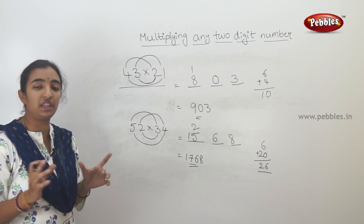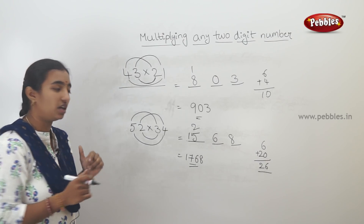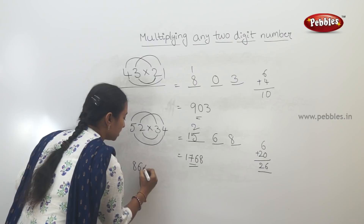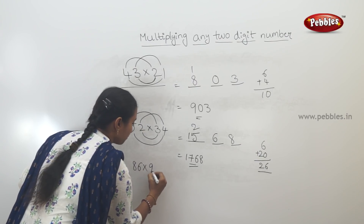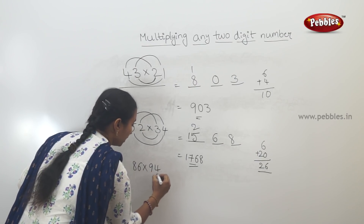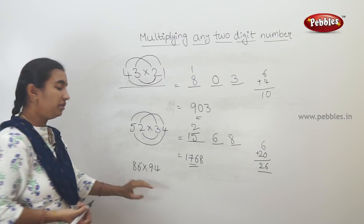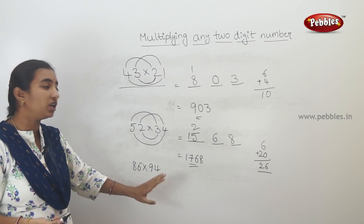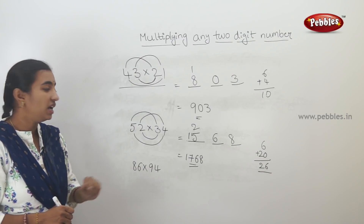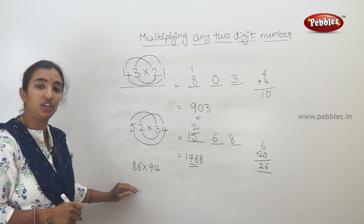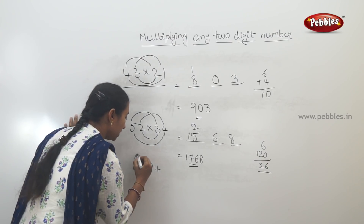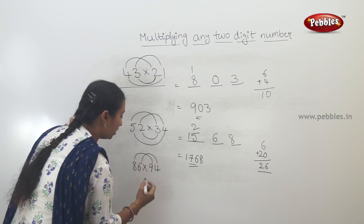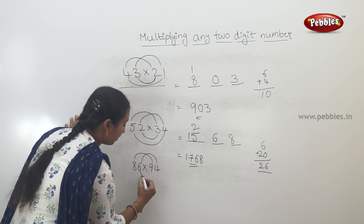Now you can switch to a 10-number example. Suppose: 86 into 94. You can do it using this shortcut method in the first and second place.